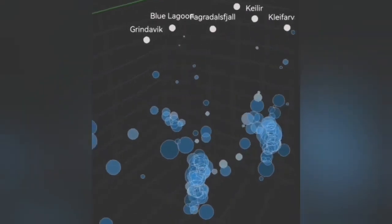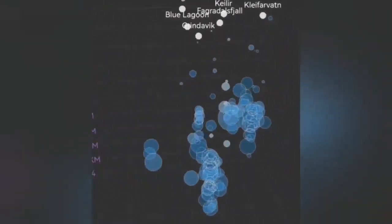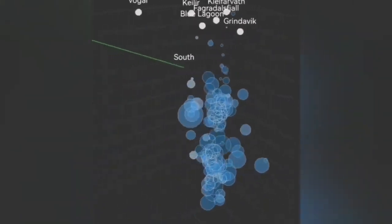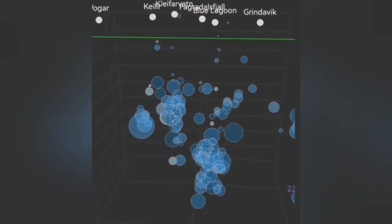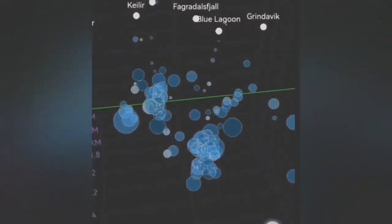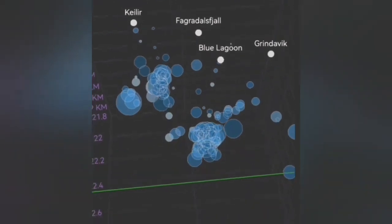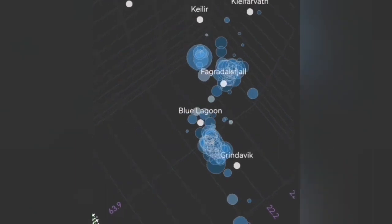This is today's model. You can see the same beam of circles, which we call a dike, moving upward and then through a transgressive sill moving toward Grindavik. I'll move it again so you can see from the top position that it's moving toward Grindavik.